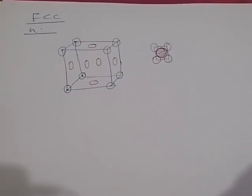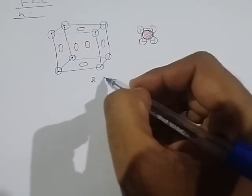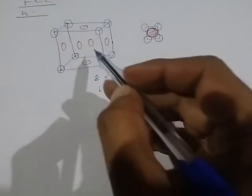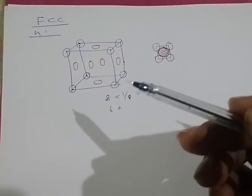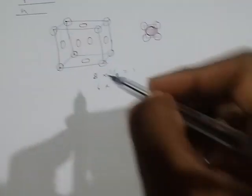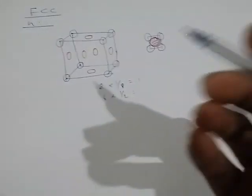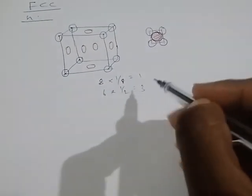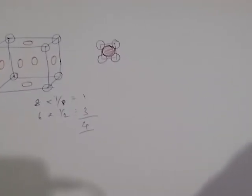The number of atoms per unit cell is calculated as follows: the corner atom contributes 1/8 part, so 8 into 1/8 is equal to 1. Added to this are the 6 face center atoms, each contributing 1/2, so 6 into 1/2 is equal to 3. Therefore, the total number of atoms per unit cell is 1 plus 3 equals 4.